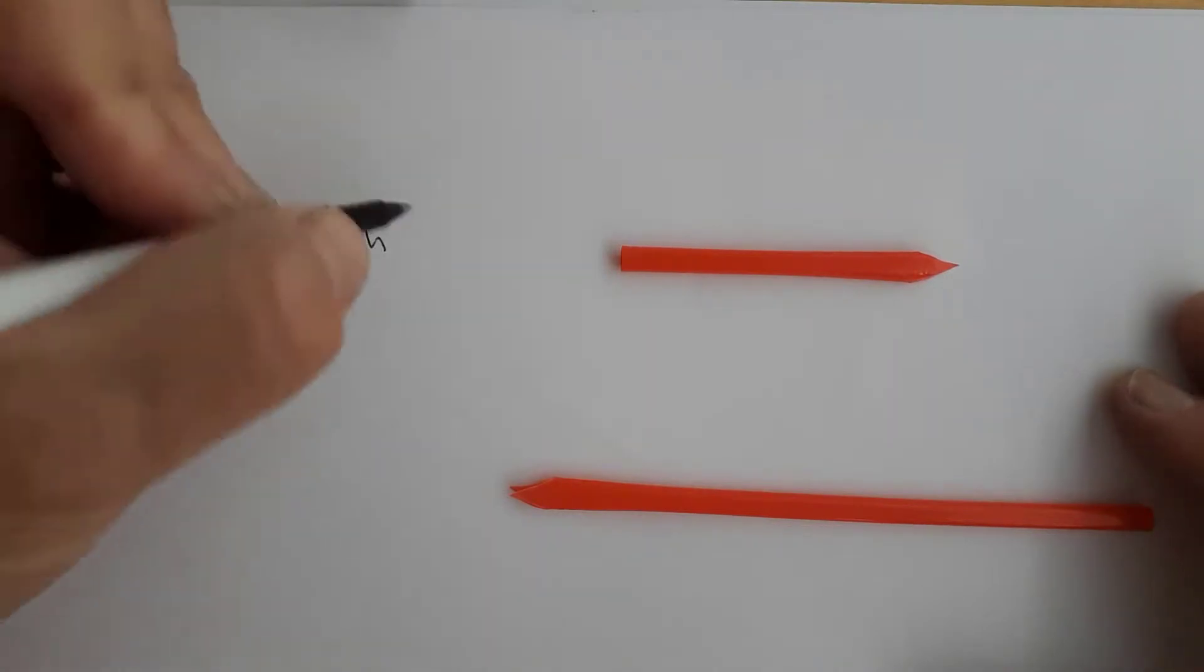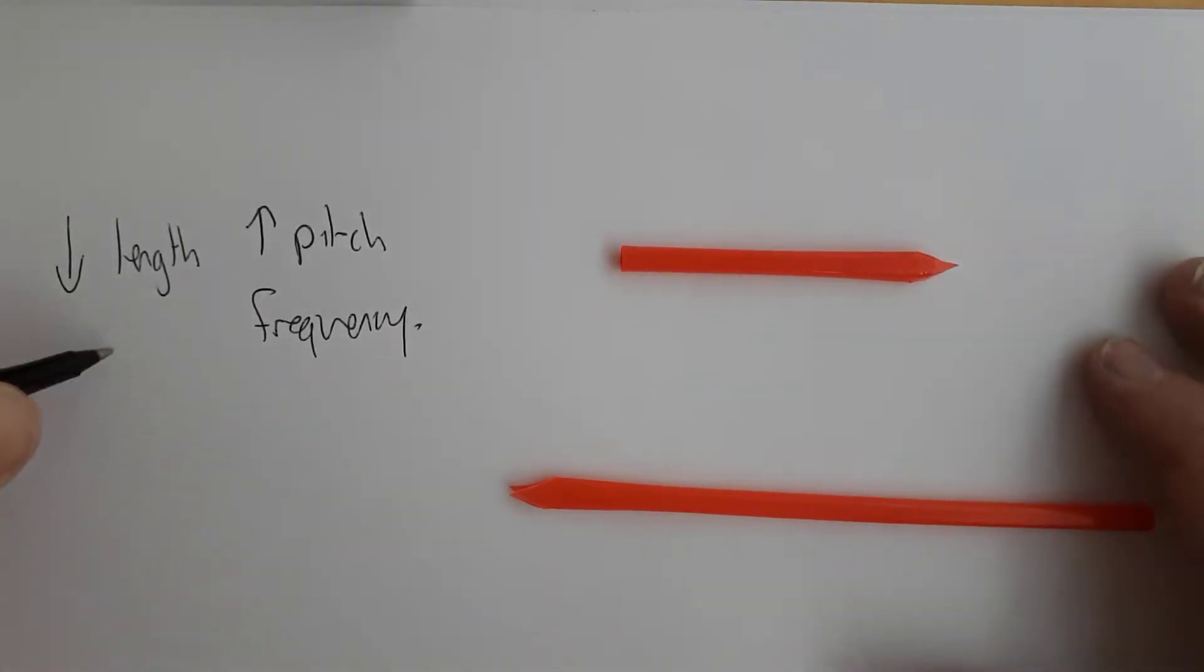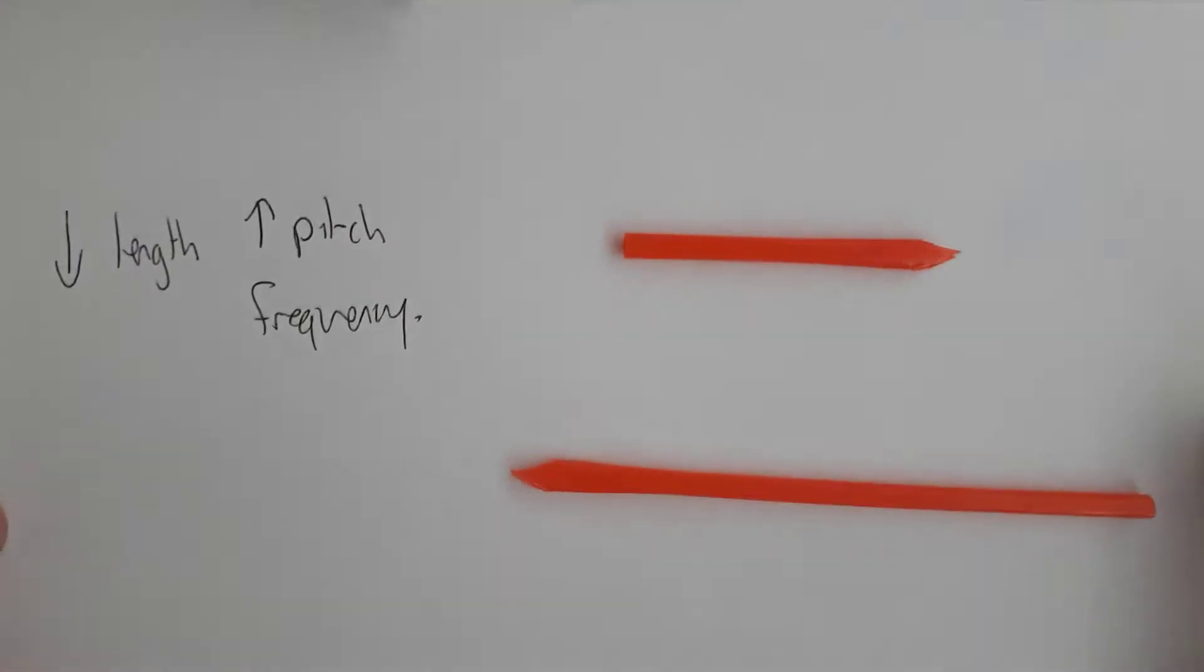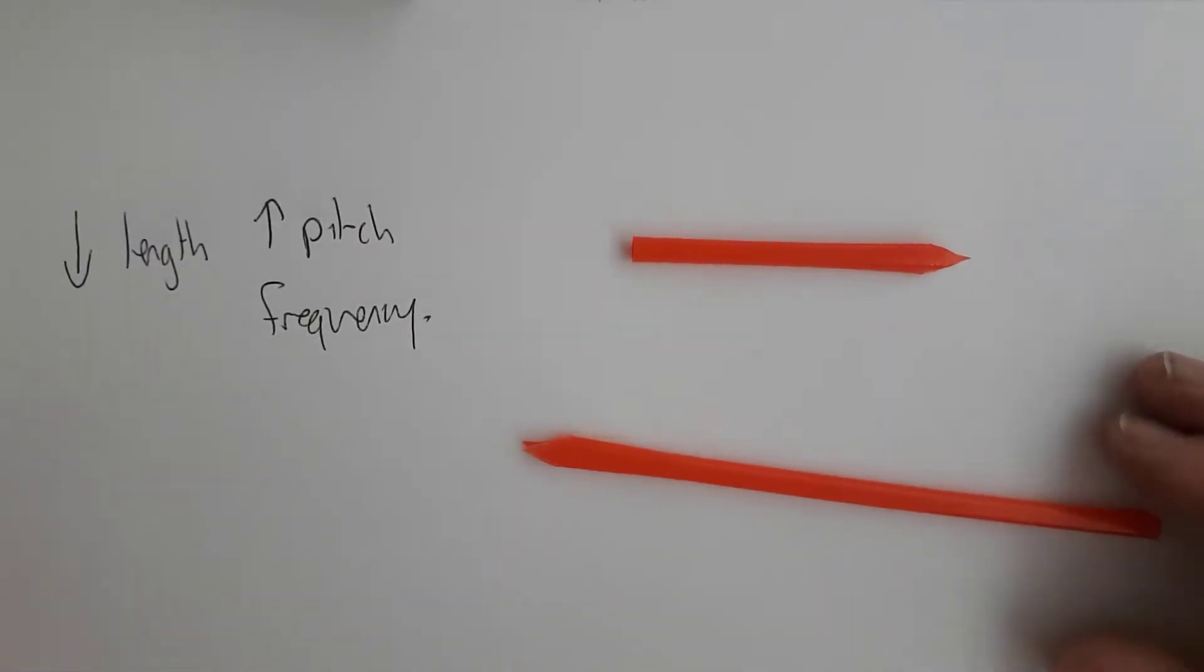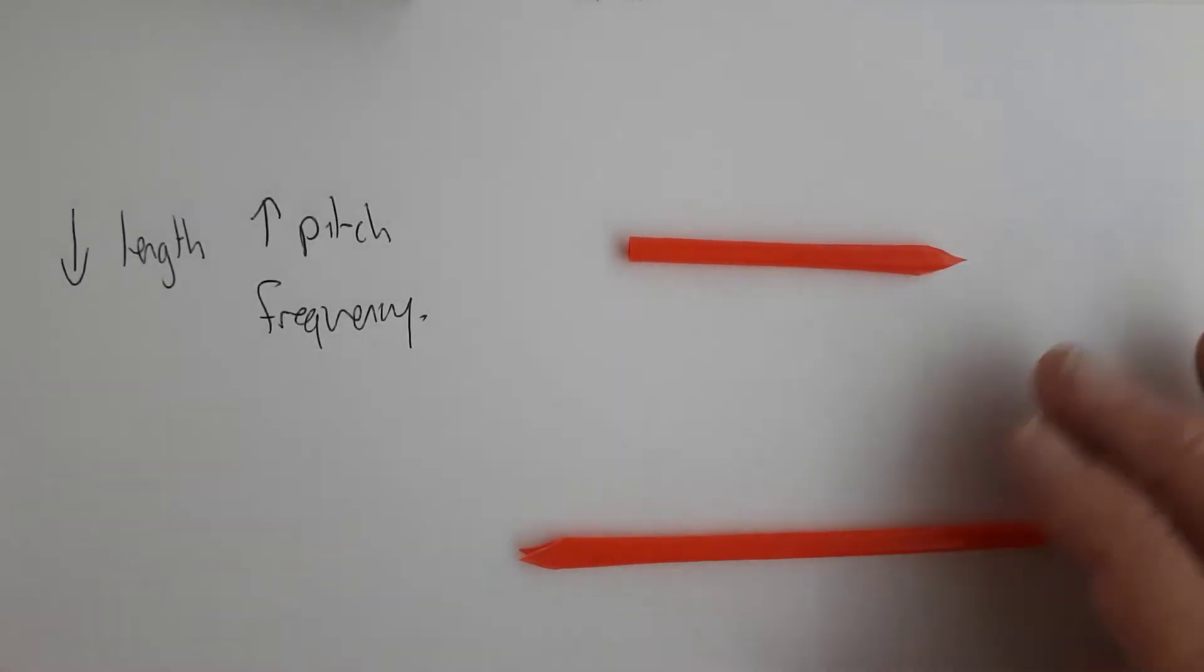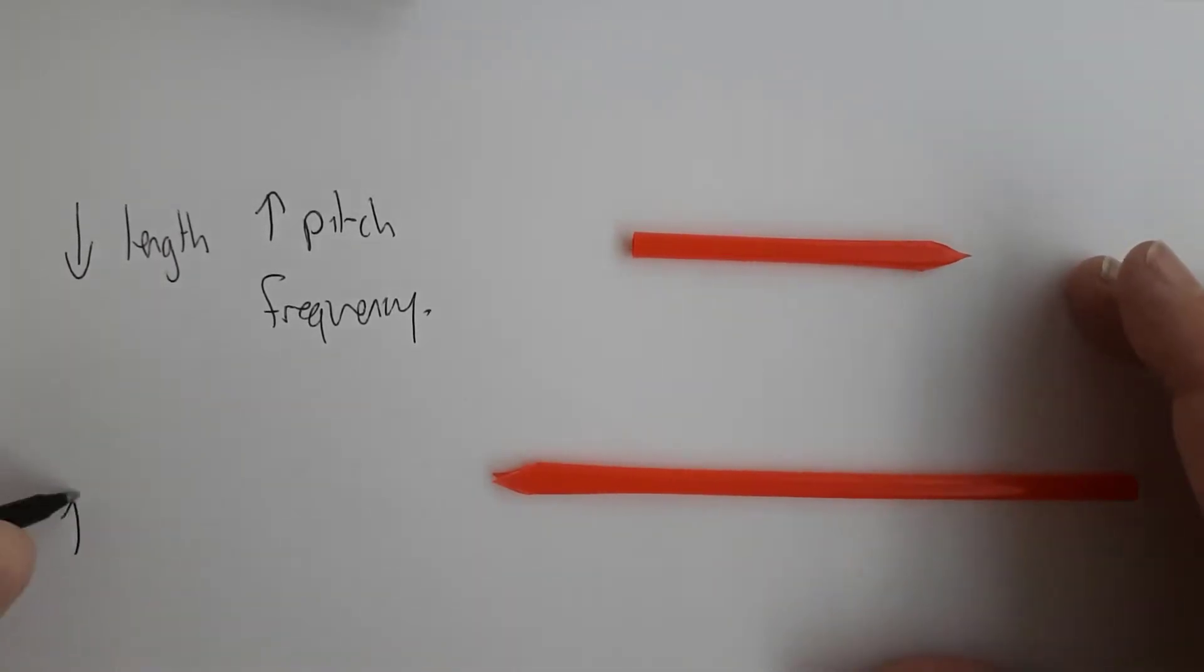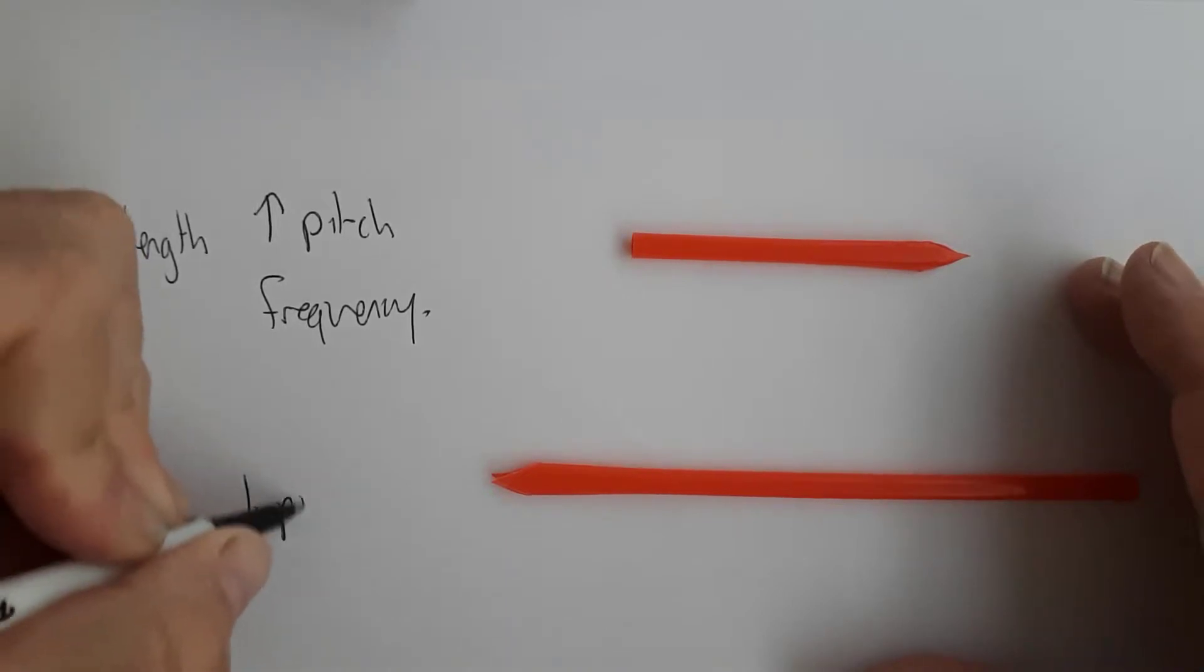And the pitch is the same as the frequency. So we have this inverse relationship between frequency and wavelength. So there's an inverse relationship between the length and the pitch. So that means that as we decrease the length, we increase the pitch. Or with this one, we increase the length and we decrease the pitch.